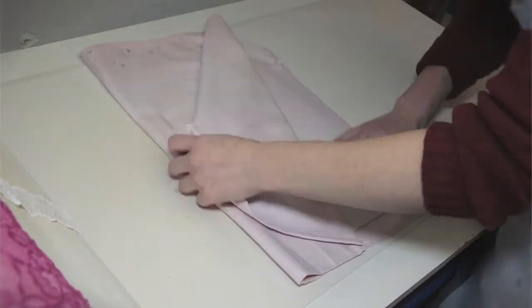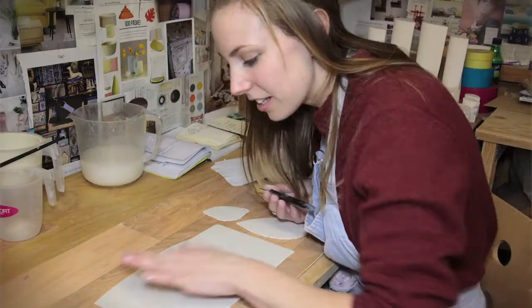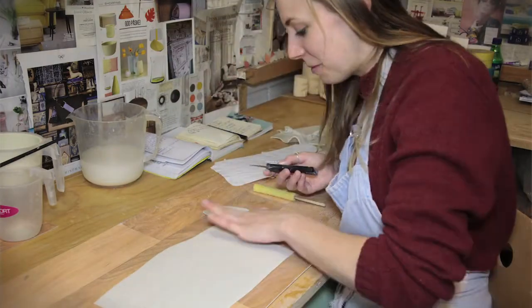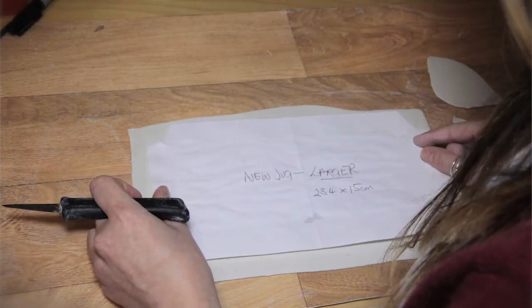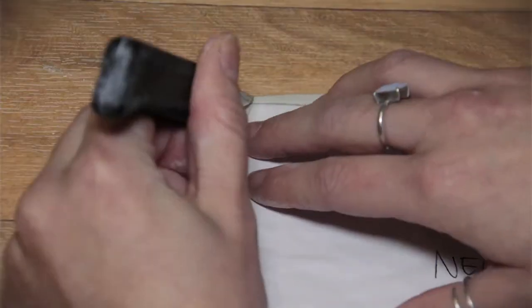The actual making process doesn't take that long; what takes the longest is the drying out process. If I was to make a jug, I could have it rolled out, built up, and covered in plastic ready to dry out in about an hour. But the drying process needs to be done at a very slow rate. For a jug, it might take three to four weeks to dry out. You absolutely can't rush it.